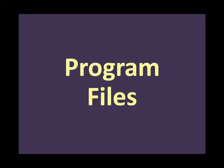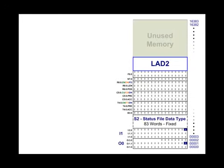Now comes the moment we have all been waiting for: the program files, the relay ladder logic. We are going to cross the line that separates the data files from the program files. For this family of processors, the program files that store the sequential logical instructions are labeled Ladder 2 through Ladder 255. Ladder 2 is unique in that it always executes automatically whenever the processor is in the run or remote run modes. Ladder 3 through 255 require a special instruction to jump from Ladder 2 to their location in memory and execute them, because they are actually subroutines.